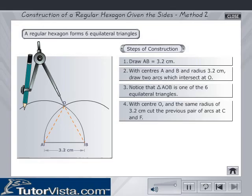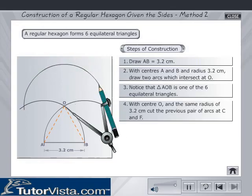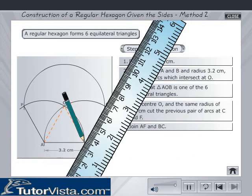With center O and the same radius of 3.2 cm, cut the previous pair of arcs at C and F. Join AF and BC.